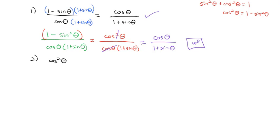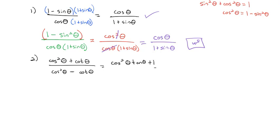Let's try another one: cosine squared theta plus cotangent of theta over cosine squared theta minus cotangent of theta. As we look at solving this, I would compare and notice both sides have cosine squared, but what we don't have is the tangent on the first term, top and bottom. So what would happen if I multiplied by tangent theta on top and bottom and distribute that tangent through?